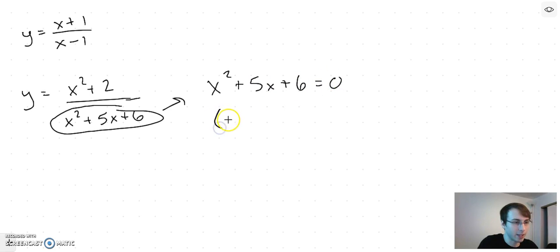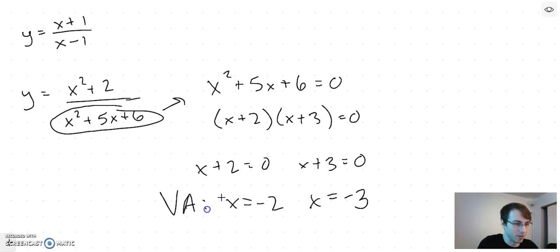So we can factor it now: x plus 2, x plus 3, and then break it up into the factors. So x equals negative 2 or x equals negative 3. So these are our vertical asymptotes.